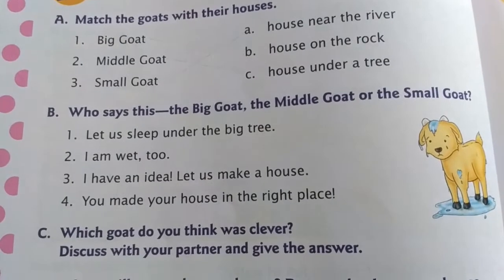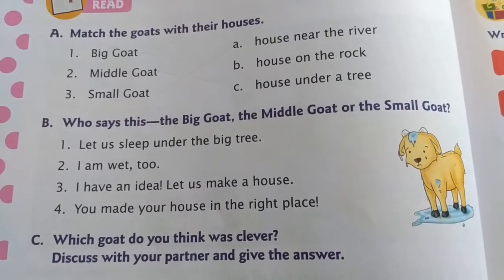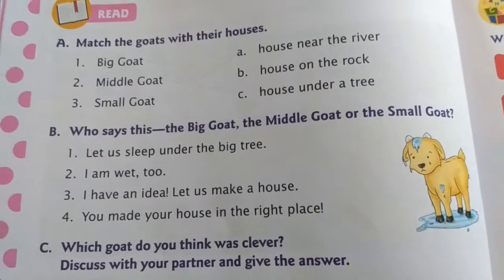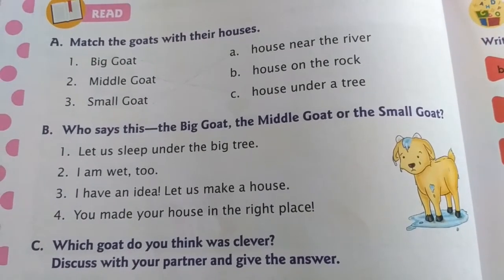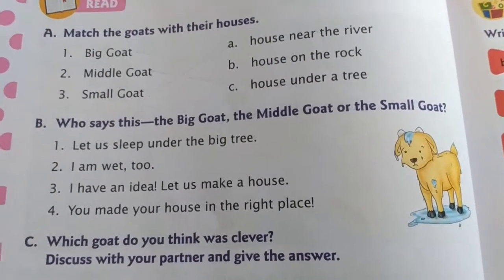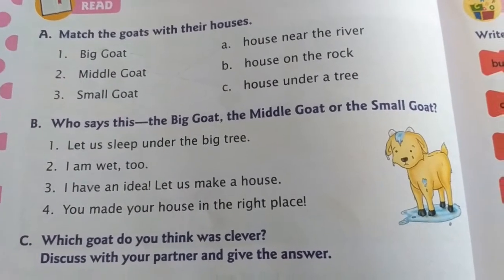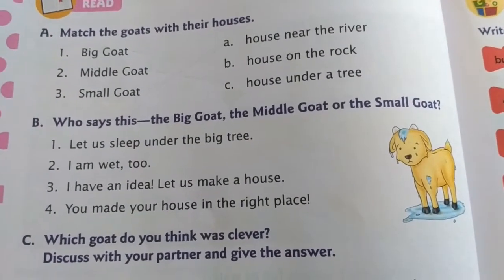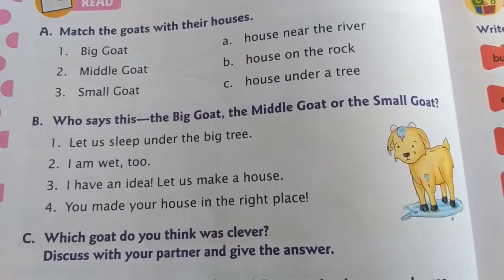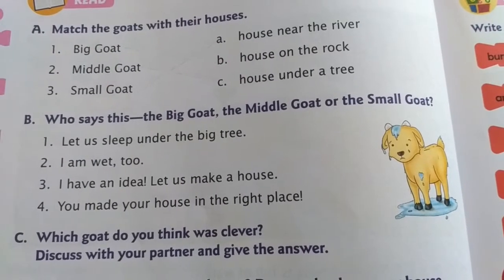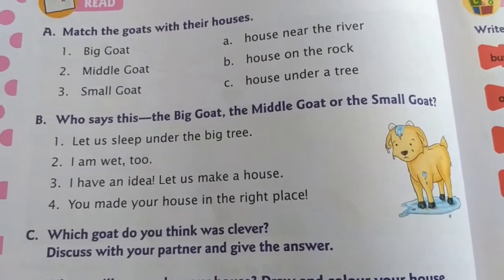Next, Part B is 'Who says this?' — the big goat, the middle goat, or the small goat? There are four sentences given. You have to tell which sentence was spoken by which goat. For example, the first sentence is 'Let us sleep under the big tree.' So you have to tell which of the three goats said this.